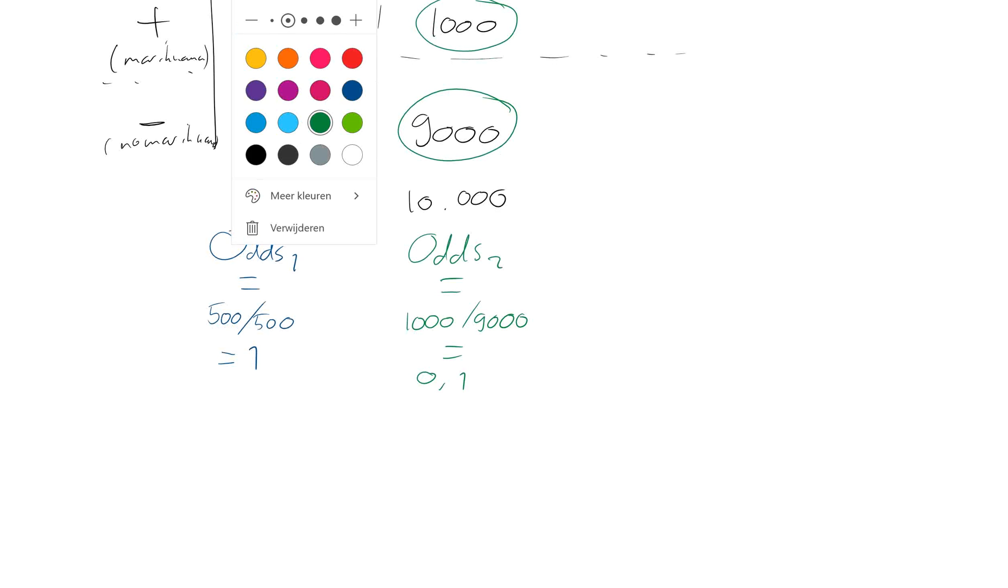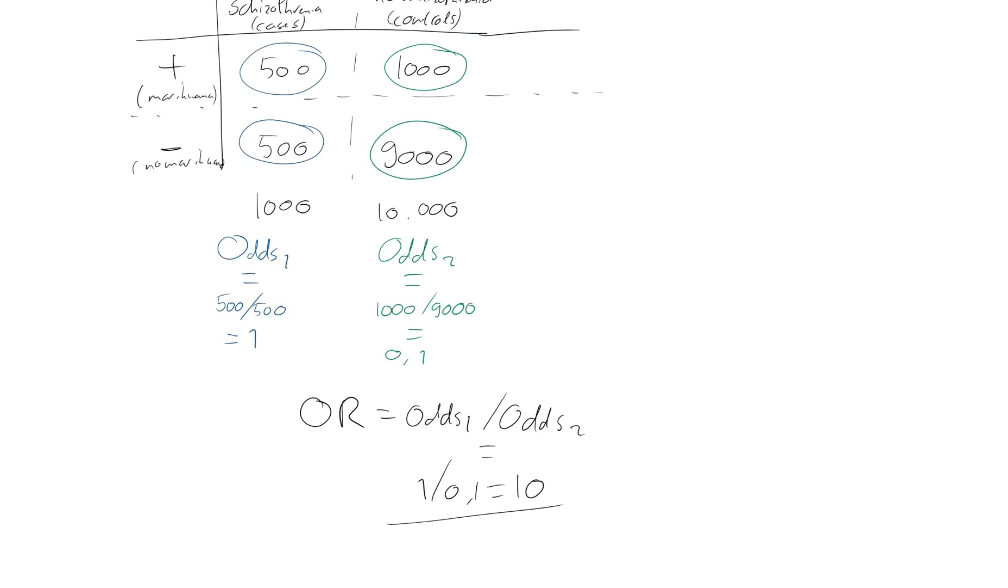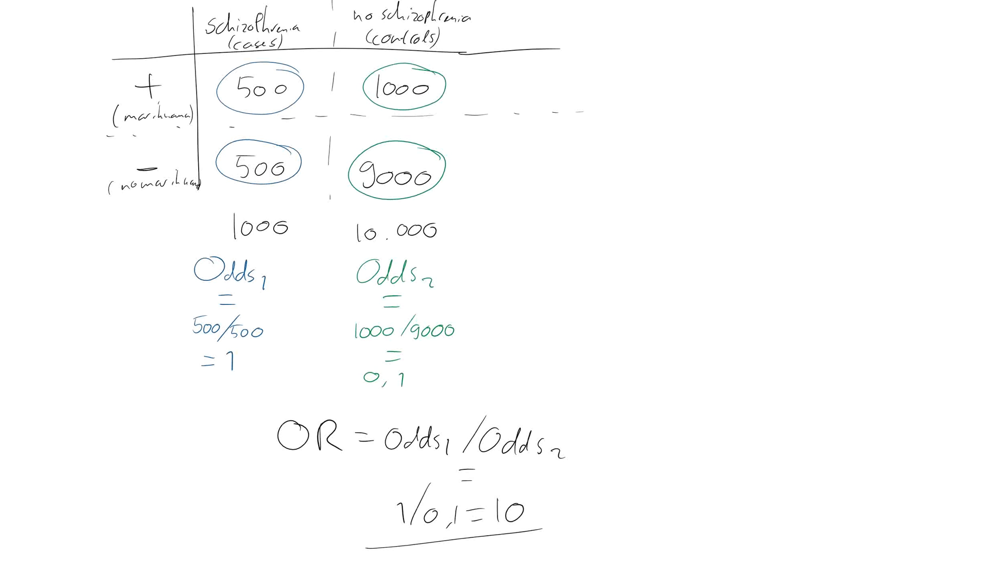Now the odds ratio is odds 1 divided by odds 2 equals 1 divided by 0.1 equals 10. So your odds ratio is 10. So the odds that a schizophrenia patient used marijuana versus a non-schizophrenia patient is 10. And that's what an odds ratio is.